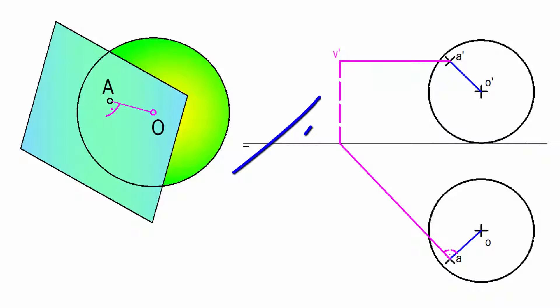We found the vertical trace of the line. Through the trace of the straight draw the trace of the plane perpendicular to the vertical projection of the line. Finally, where the vertical trace of the plane intersects the ground line to draw the horizontal trace of the plane perpendicular to the horizontal projection of the line.